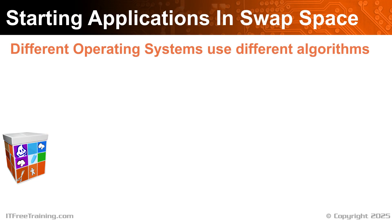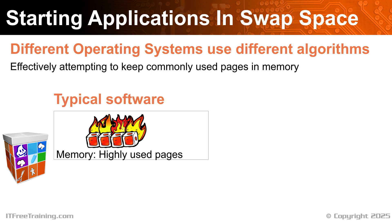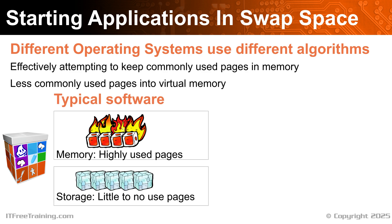Different operating systems use different algorithms for memory management, but effectively they are trying to achieve the same thing — attempting to keep commonly used pages in memory and less commonly used pages in virtual memory. Even if you have a lot of memory, the operating system is still going to use some virtual memory. Some operating systems, when the system is not under load, will attempt to pre-emptively determine which pages are likely to be swapped out later. The idea is that if the system is suddenly put under a lot of load, the operating system has already done some pre-work. On some operating systems, the OS will keep the page in memory and write it to local storage ahead of time, so if the memory is needed later, it can essentially just free the page.